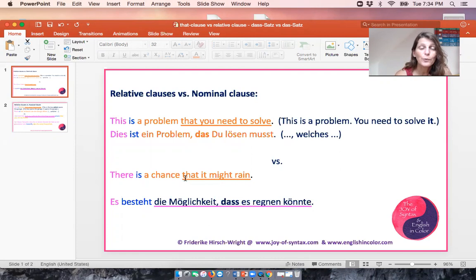Compare that with the conjunction that, which introduces a subclause that functions as nominal clause or noun clause or a substantive clause. Nominal clauses are subclauses that can either function as clause elements or as modifiers. In this case you see that that clause is a modifier of the noun chance. So there's a chance that it might rain.